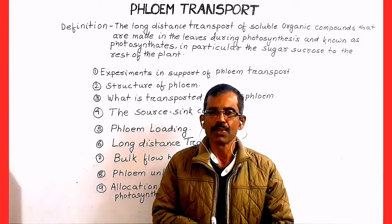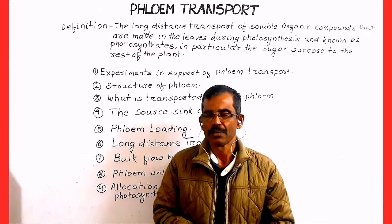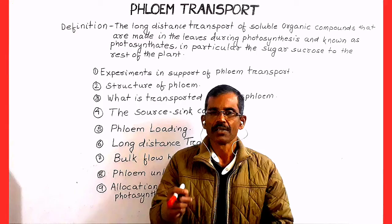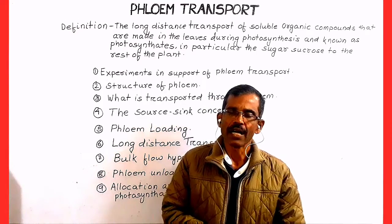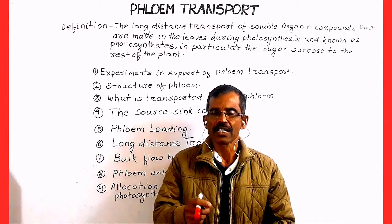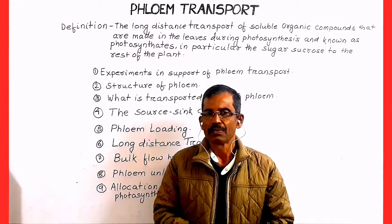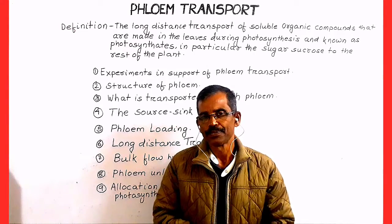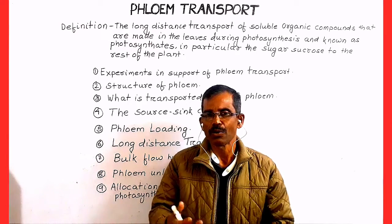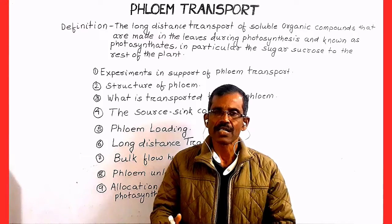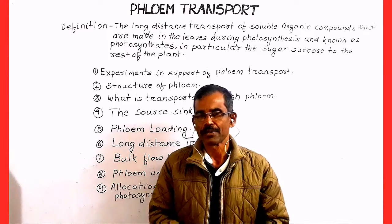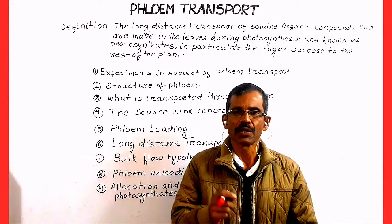As the distance between the leaves and the roots increased, plants started developing complex tissues such as xylem and phloem. Xylem is a complex tissue through which long-distance transport of water takes place from root to the rest of the plant. Phloem is another complex tissue which plays a role in the long-distance transport of photosynthates from leaves to the rest of the plant.